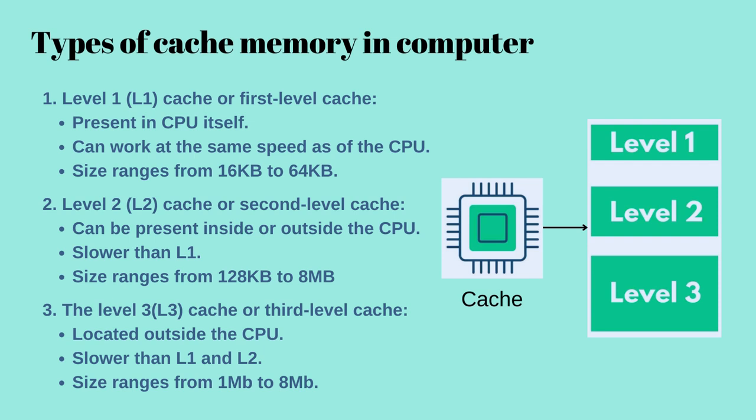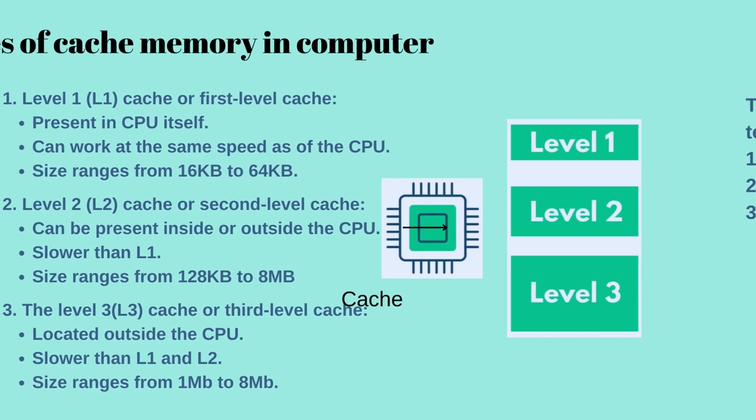Next, Level 3 or L3 cache. It is the slowest cache and greatest in size as compared to other cache memories. It is located outside the CPU and is shared by all the cores of the CPU. This cache is not present in all processors — only some high-end processors may have this type of cache. Level 3 cache is used to improve the performance of Level 1 and Level 2 cache. Its memory size ranges from 1MB to 18MB.